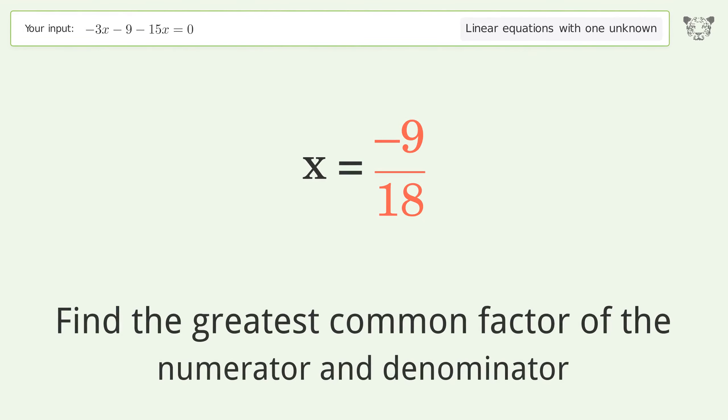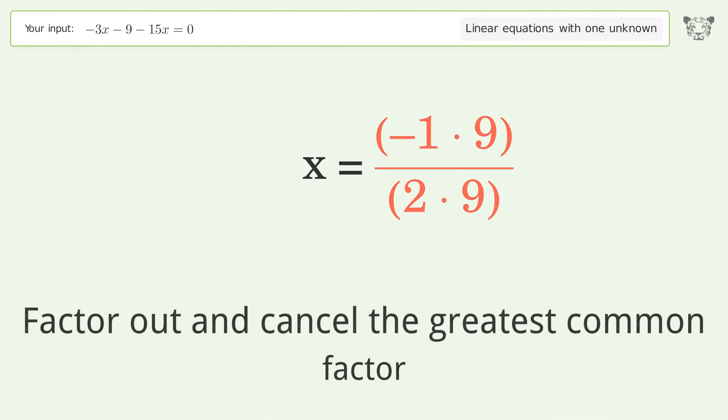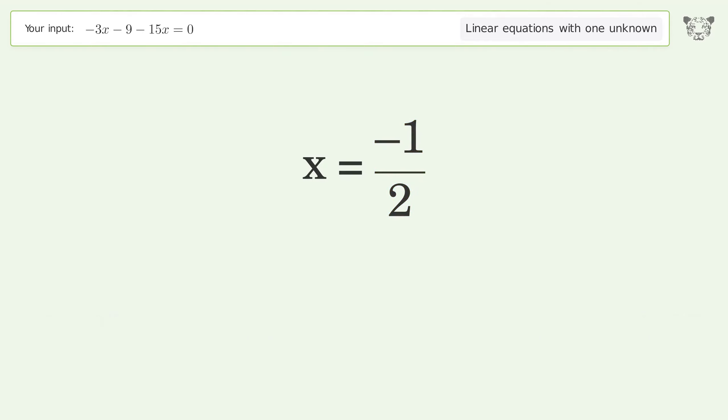Find the greatest common factor of the numerator and denominator. Factor out and cancel the greatest common factor. And so the final result is x equals negative one over two.